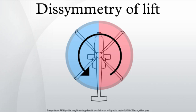Dissymmetry of lift in rotorcraft aerodynamics refers to an uneven amount of lift on opposite sides of the rotor disc. It is a phenomenon that affects single rotor helicopters in forward flight.